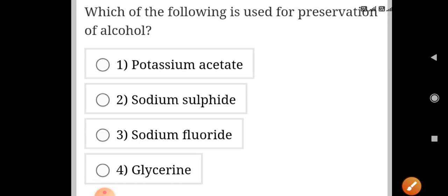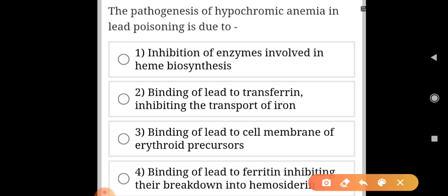Which of the following is used for preservation of alcohol? Alcohol preservation we use sodium fluoride. The pathogenesis of hypochromic anemia in lead poisoning is due to inhibition of enzymes involved in heme biosynthesis.